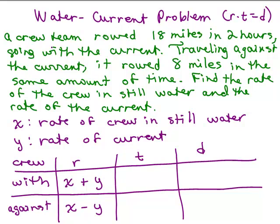Let's look back up to the problem. They rowed 18 miles in 2 hours and then going against it, it rowed 8 miles in the same amount of time. So for this problem, the time is the same for both of them, 2 hours. And what does it tell us about the distance? Well, rowing with the current, it went 18 miles. So we've got 18 miles with the current and 8 miles against the current.